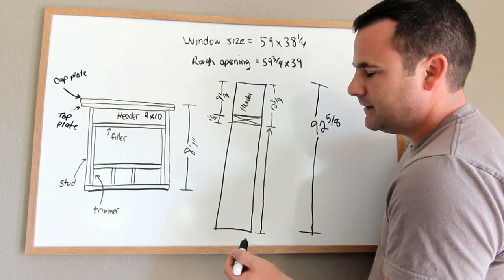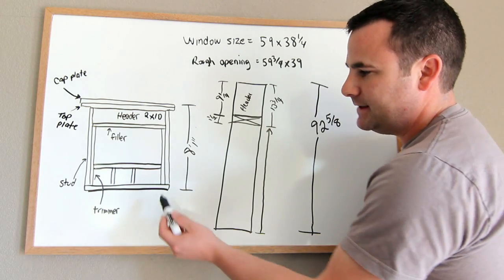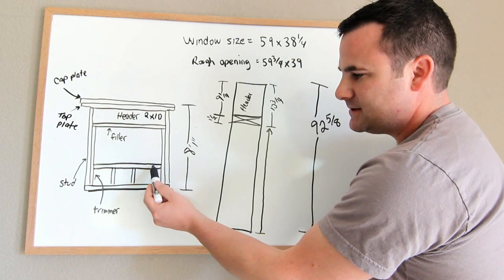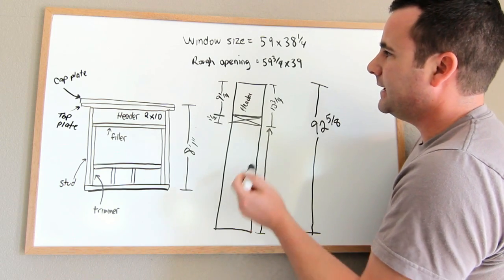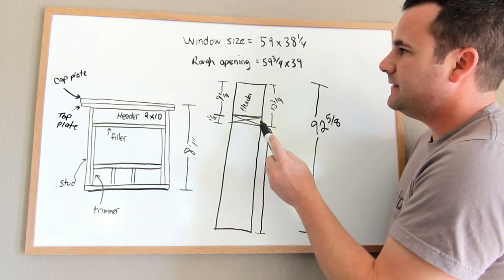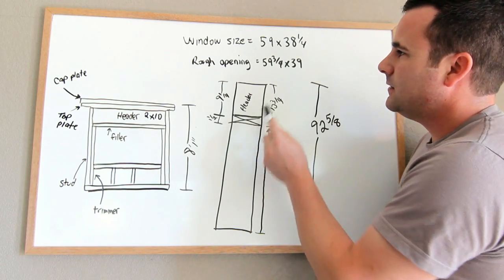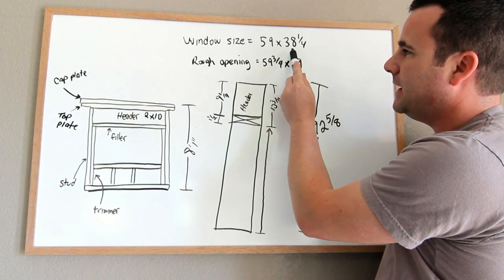Now the other thing you can do is figure out the heights of your cripples. So in this scenario, we have the window 59 by 38 and a quarter.